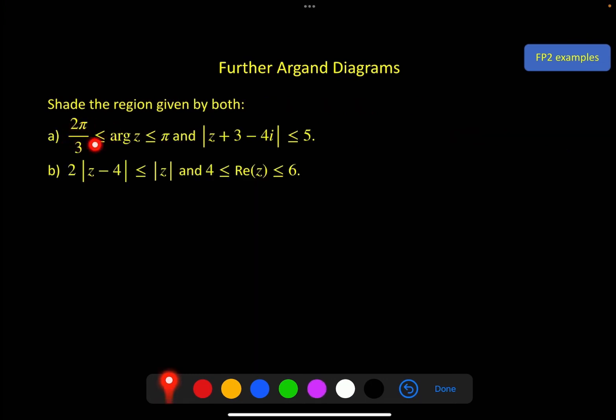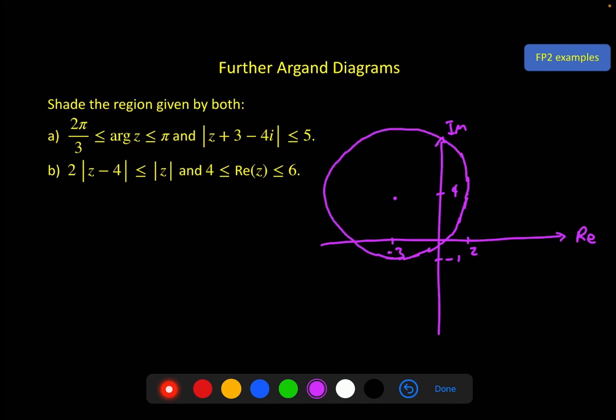Shade the region given by both this locus and this locus. So here we've got a circle, centre, minus 3, 4, with a radius of 5. I'll plot that first. Minus 3, 4. And if it has a radius of 5, it will cut both axes. This one, it will come down to a minus 1. And over here, as it comes round, it should come out to 2.